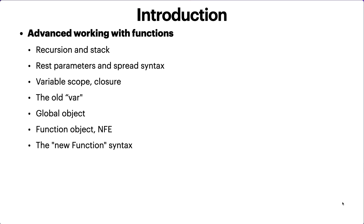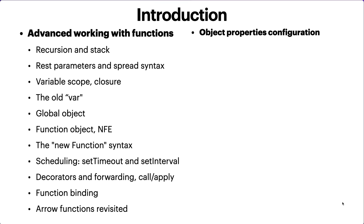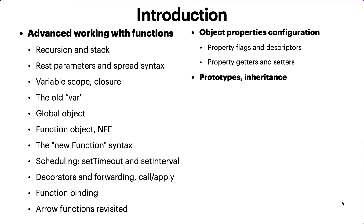We'll look at the old 'var' keyword, what 'this' is and how we use it, the global object, the 'new Function' syntax, and scheduling with setTimeout and setInterval to execute code at certain times. Then decorators, forwarding, function binding, and a deeper look at arrow functions — how they differ from conventional function writing.